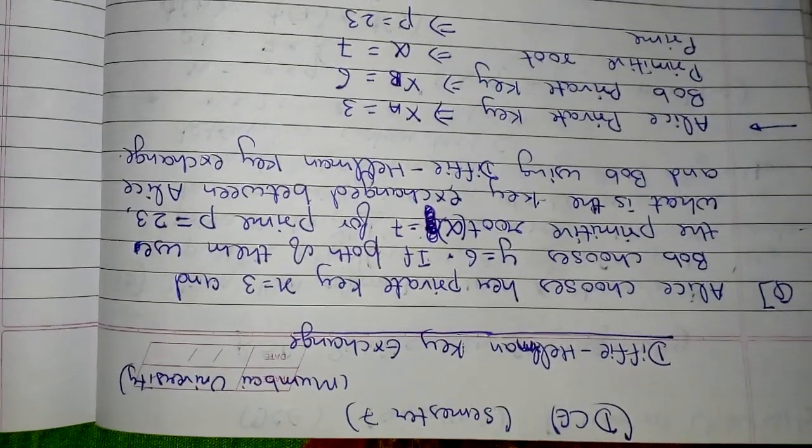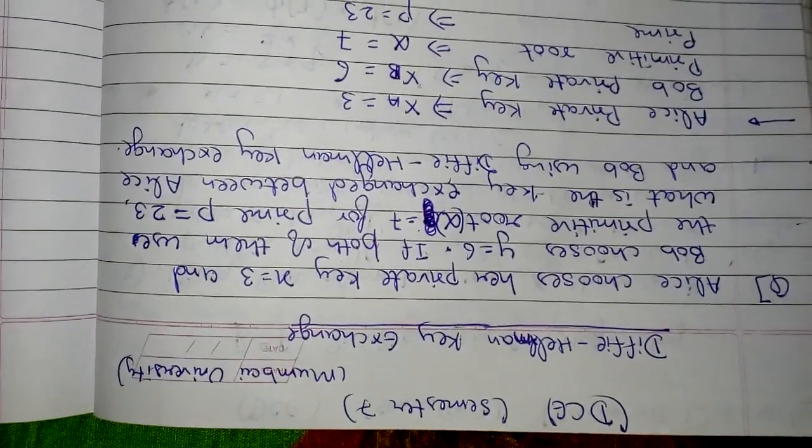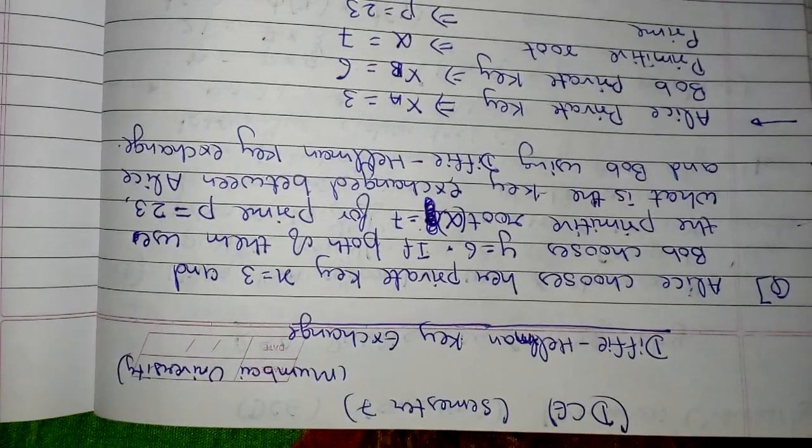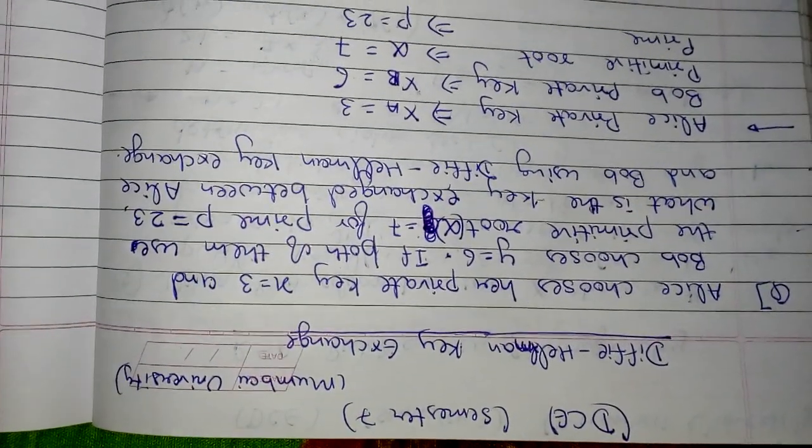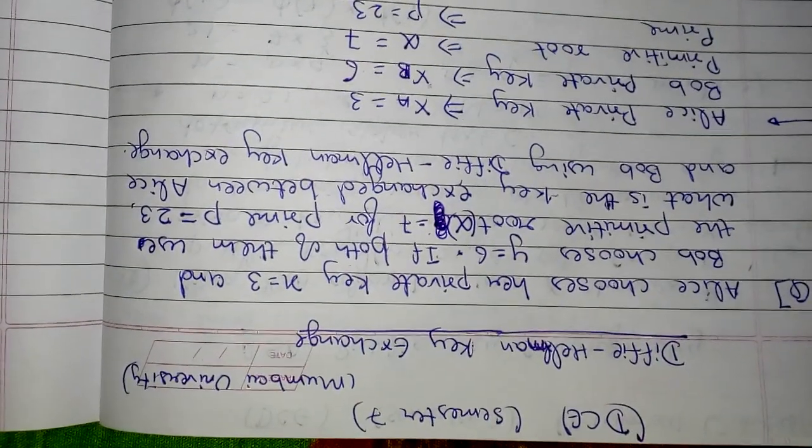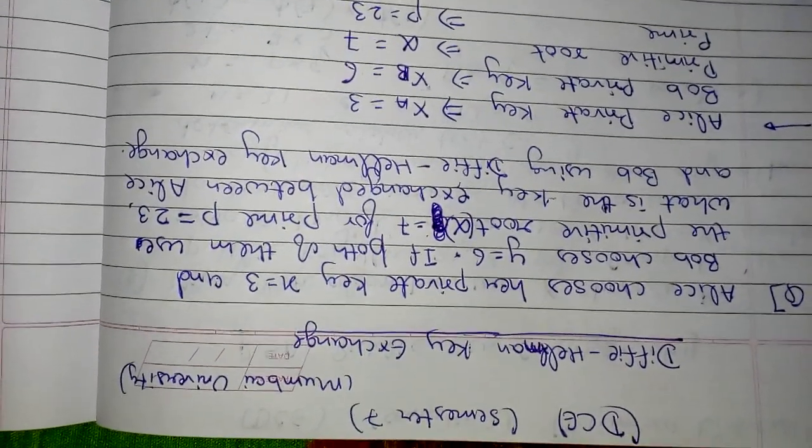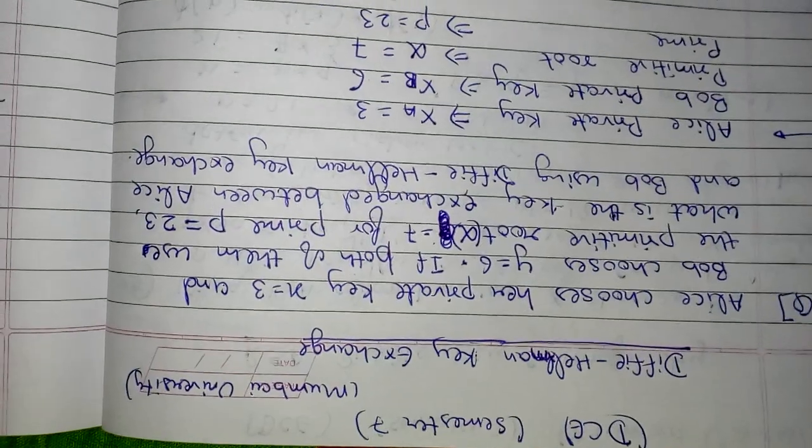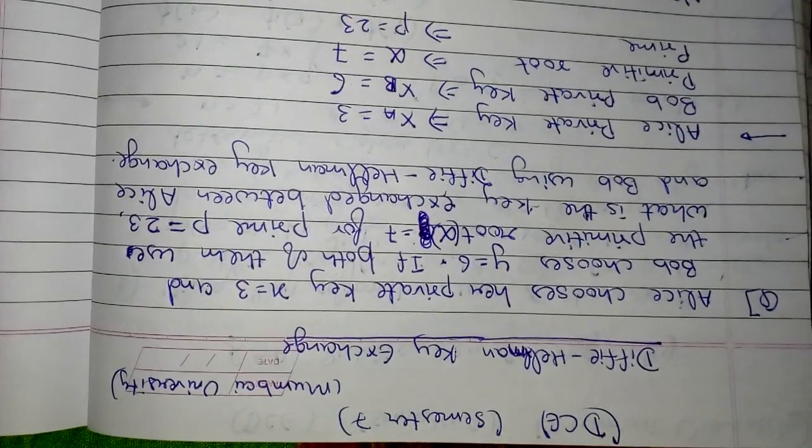Hello everyone, in this video we are going to look at Diffie-Hellman key exchange. The question is: Alice chooses her private key x equal to 3 and Bob chooses y equal to 6. If both of them use the primitive root alpha equal to 7 for prime p equal to 23, what is the key exchange between Alice and Bob using Diffie-Hellman key exchange?